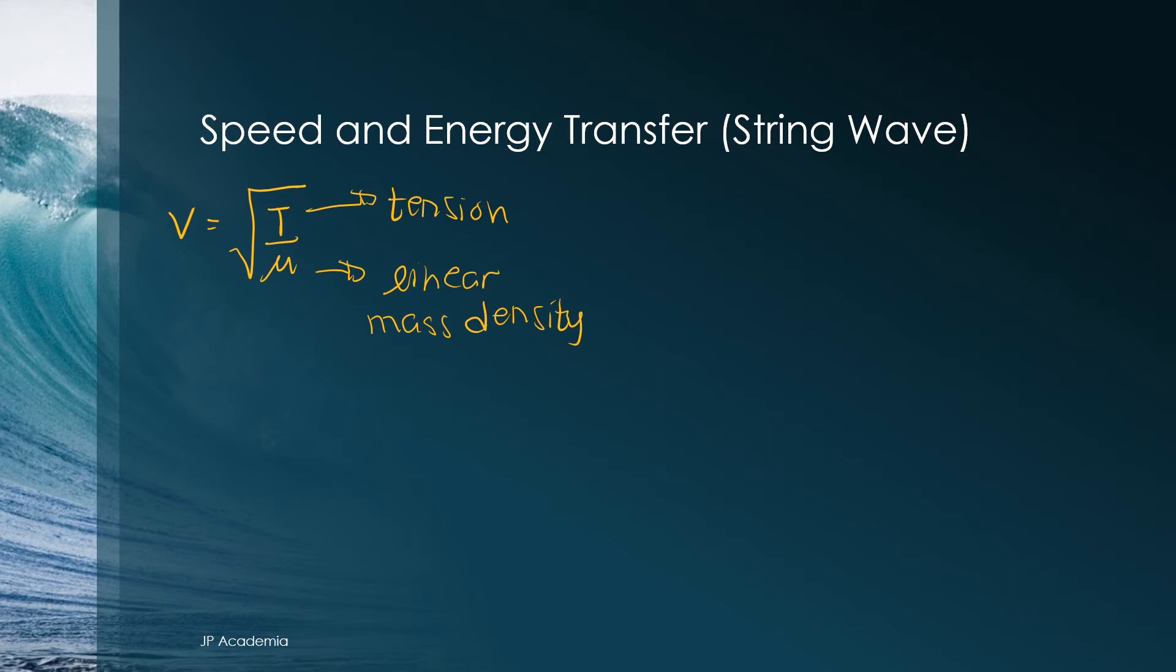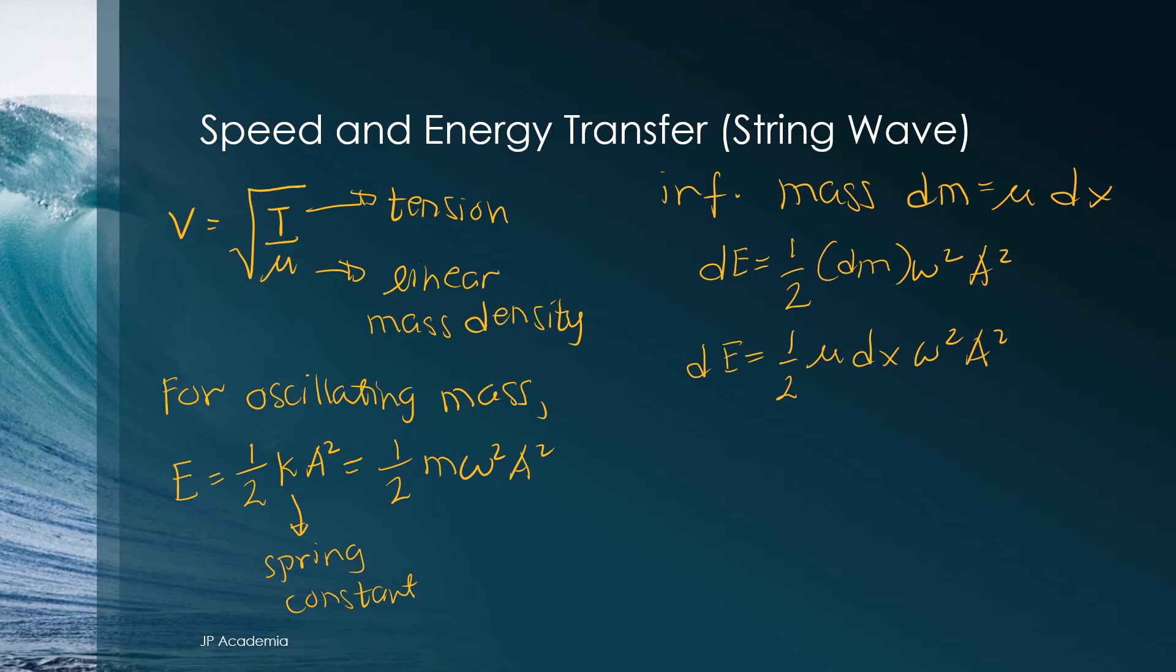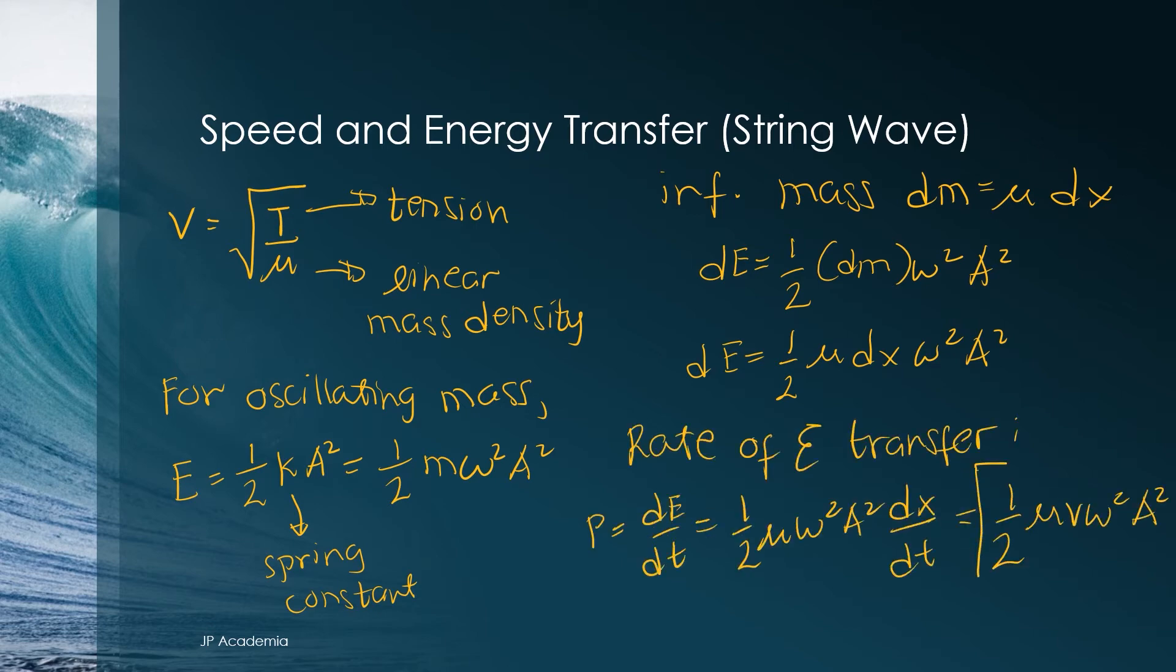And now, let's go to an oscillating mass spring system. Remember that the total energy of the mass is expressed as e is equal to one half ka squared, wherein k is the spring constant that can be expressed as m omega squared, as shown. If we consider an infinitesimal length dx, so this is just a fancy term for a very small amount of length, or for this case we have also infinitesimal mass dm expressed in terms of the linear mass density mu, as shown. Therefore, we can express the infinitesimal energy d e as one half dm omega squared a squared. And we can rewrite dm here in terms of mu dx. This is quite straightforward.